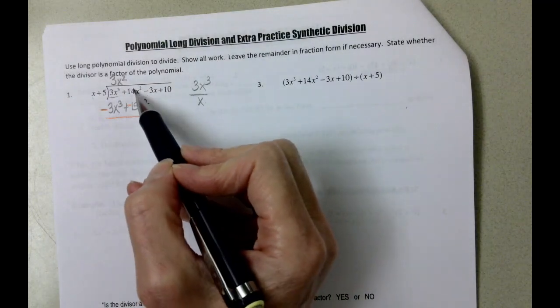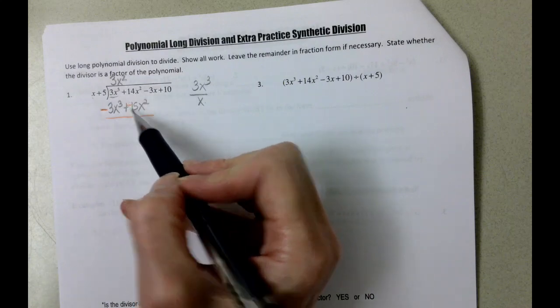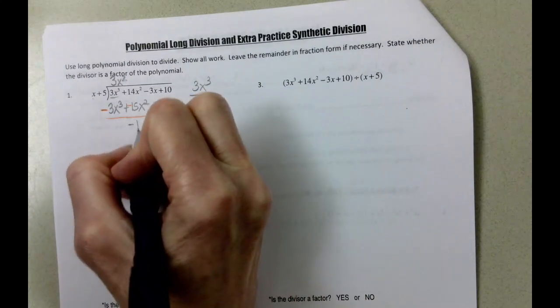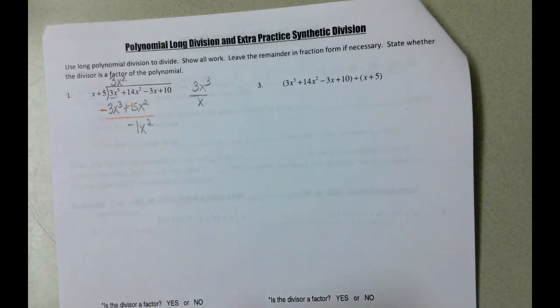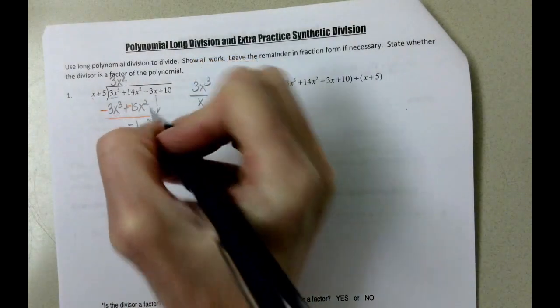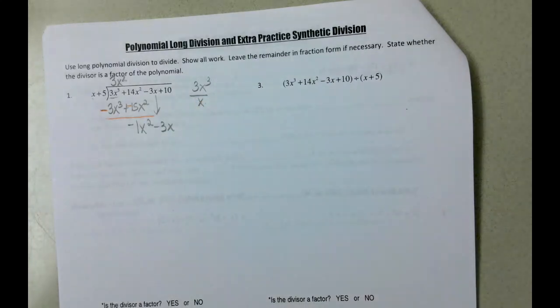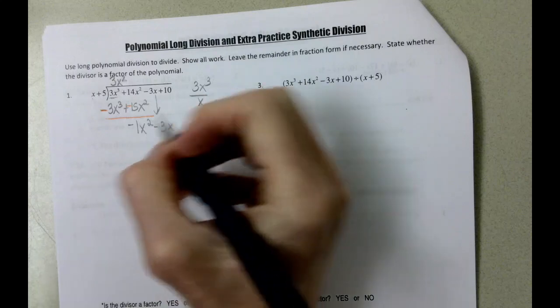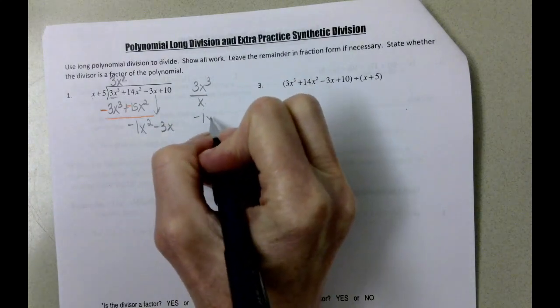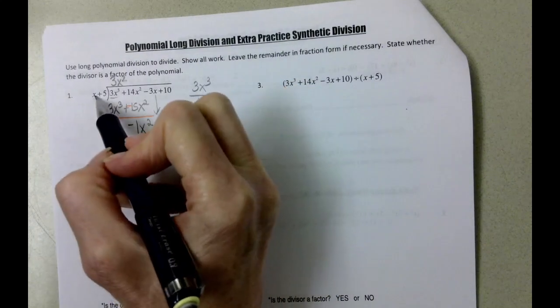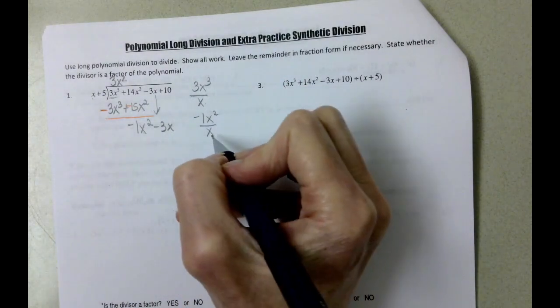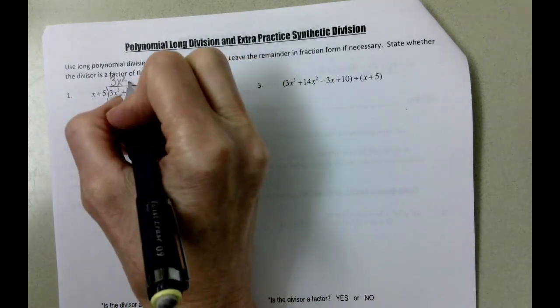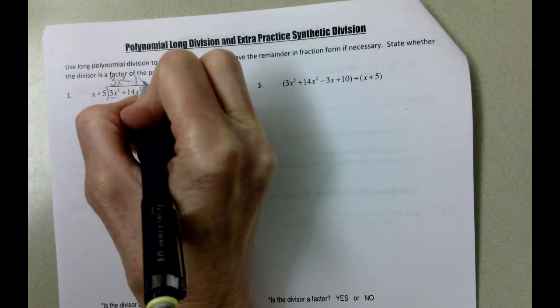And then we have 14x squared minus 15x squared, which is negative 1x squared. Then we're going to bring down the minus 3x. And we're going to go through that process again. So we're going to take the highest degree term, which is negative 1x squared, and we're going to divide it by our x here. Well, we had two x's. We took out one of them. So what's left up here is minus 1x.